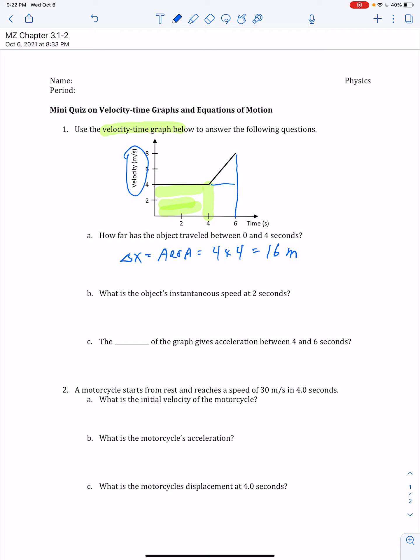Question B is asking what is the object's instantaneous speed at two seconds? We can read that right off the graph. At two seconds, I look at the graph. The velocity is 4 meters per second.